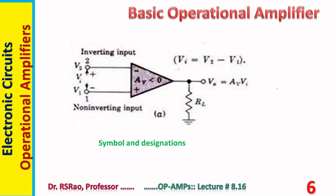Now, a few points regarding symbol and terminal designations of op-amp. The symbol is a magnified arrow shape. There are two terminals on the input side: against one terminal a minus sign is shown — this is called the inverting terminal — and against the other terminal a plus sign is shown — this is called the non-inverting terminal. The input to the amplifier V_i is V2 minus V1, where V2 is the input to the inverting terminal and V1 is the input to the non-inverting terminal. Outside, there is a single output terminal where the output voltage appears.